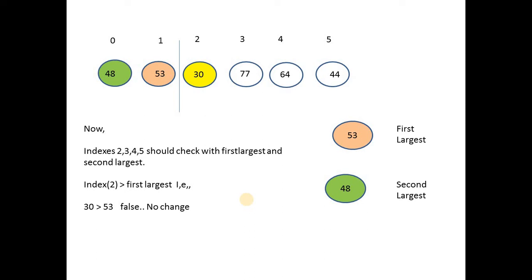Now at index 2, we check: is 30 greater than the first largest (53)? False. So we check whether index 2 is greater than the second largest: is 30 greater than 48? Also false. So there is no change — first largest remains 53 and second largest remains 48.